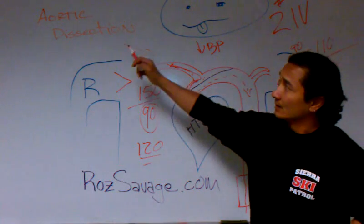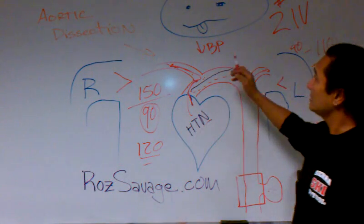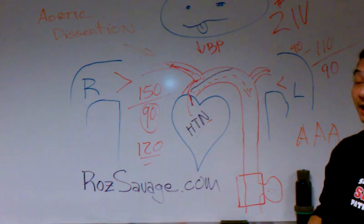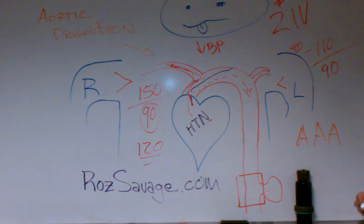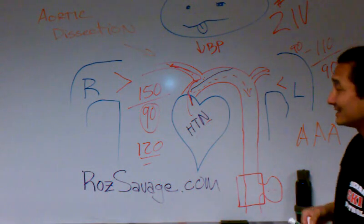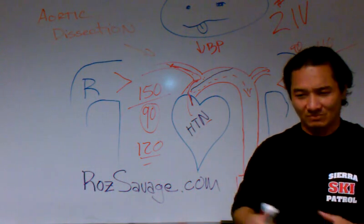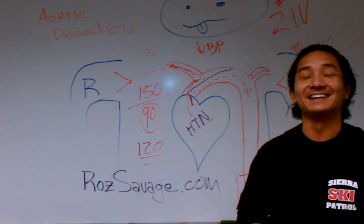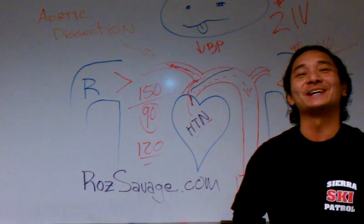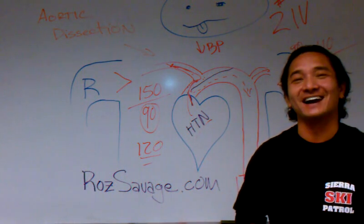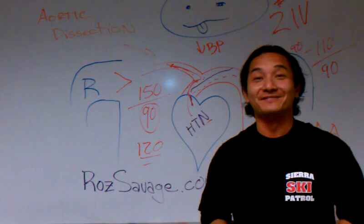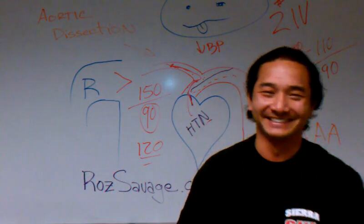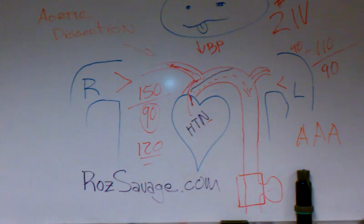So anyway, there you go — an aortic dissection and a AAA. Come see my friend Roz Savage; I'm promoting her. And of course, this is Jay Goswiko with Sierra at Tahoe Ski Patrol. We wear the vest. Shaka.